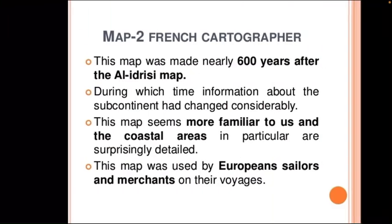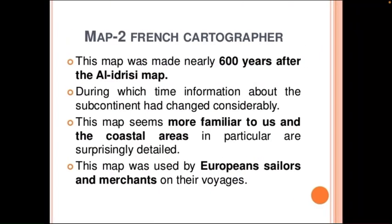In Map 2, which was made by a French cartographer nearly 600 years after Al-Adrissi's map, the map is considerably matching today's map. It is more or less familiar to us, and the coastal areas in particular are surprisingly detailed. This map was used by European sailors and merchants on their voyages when they visited India.